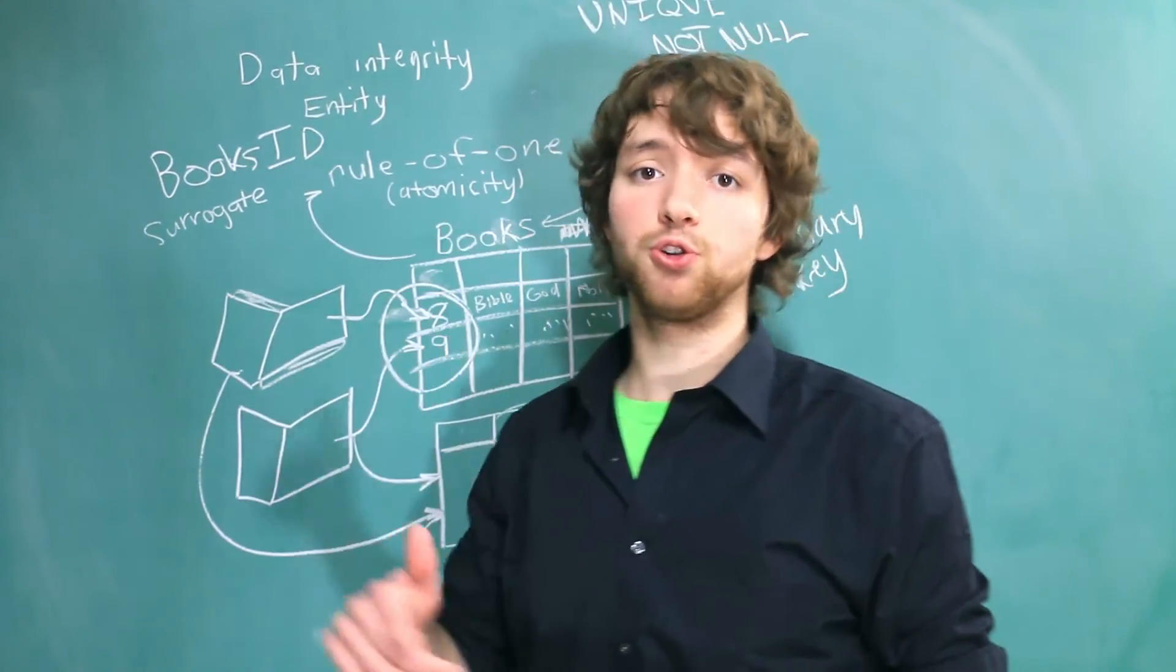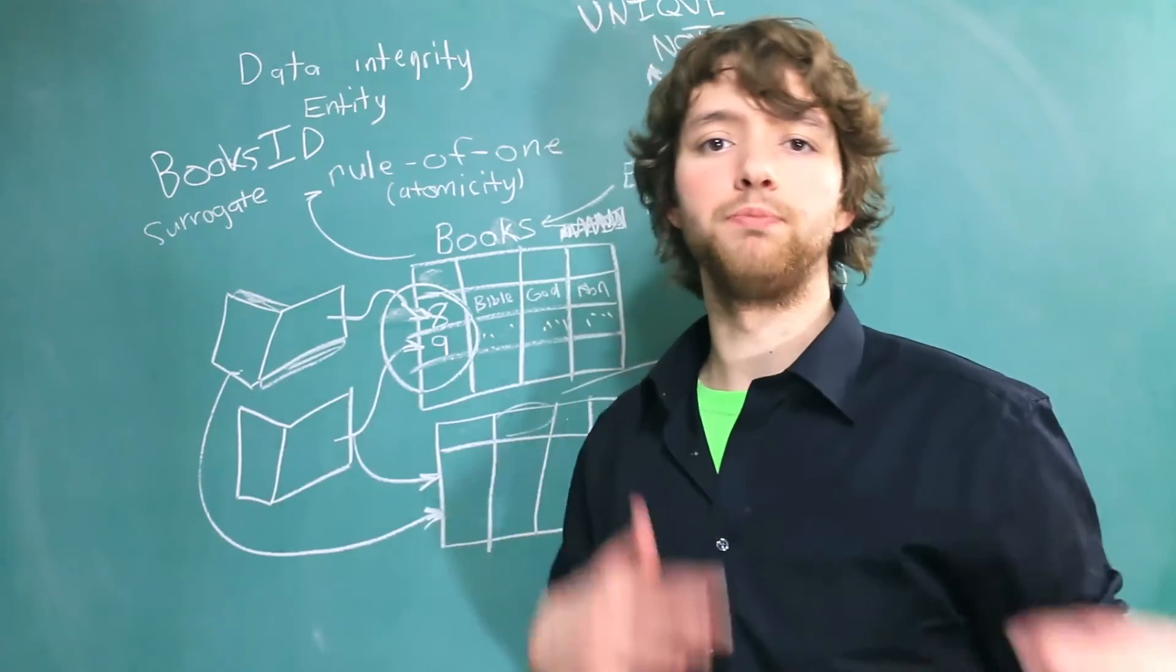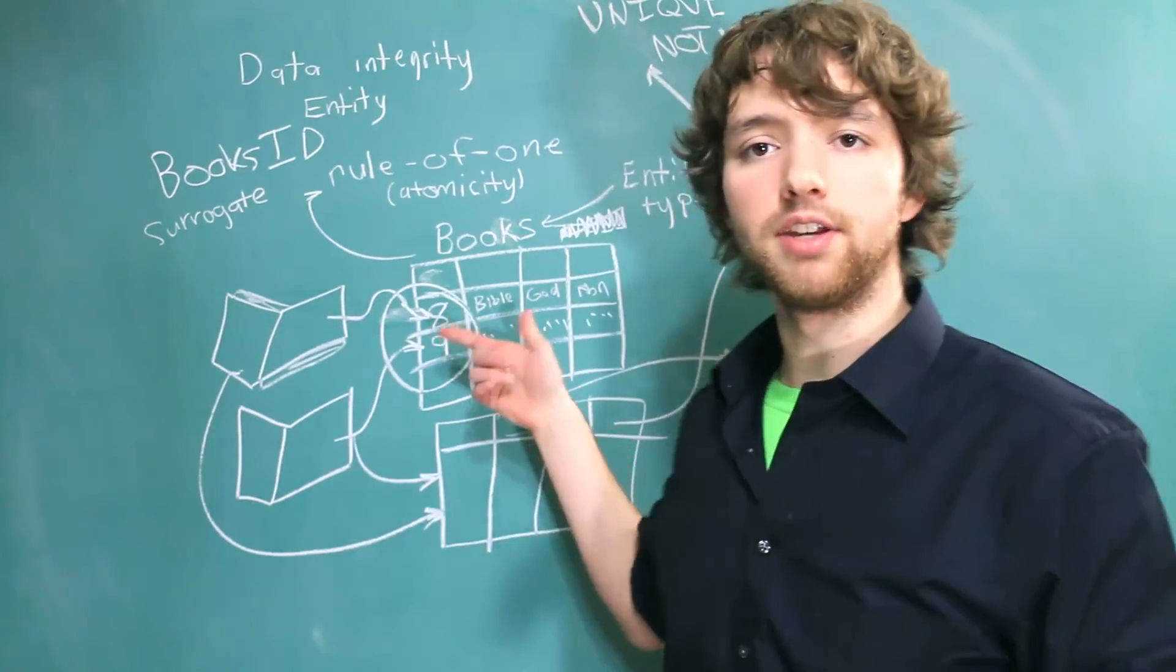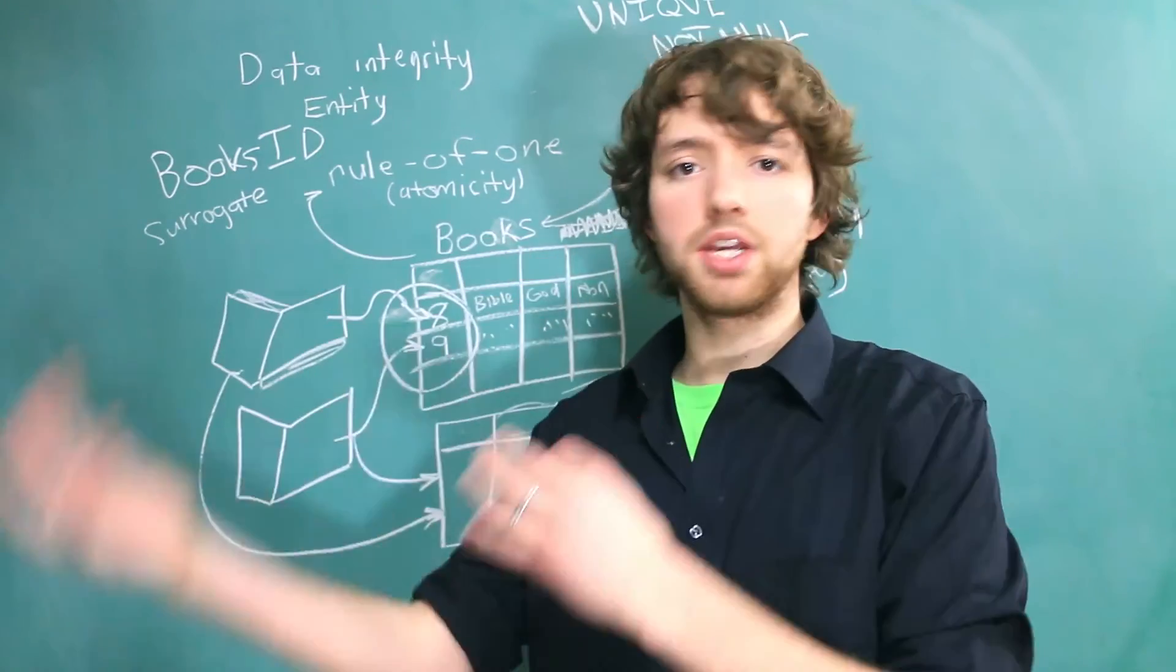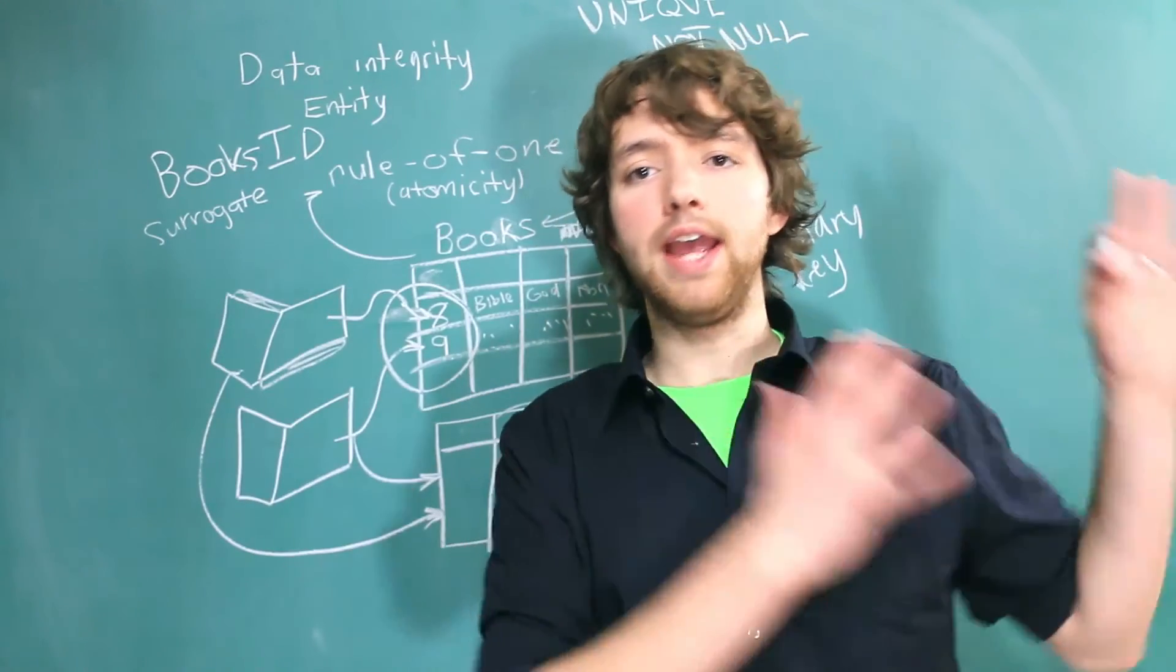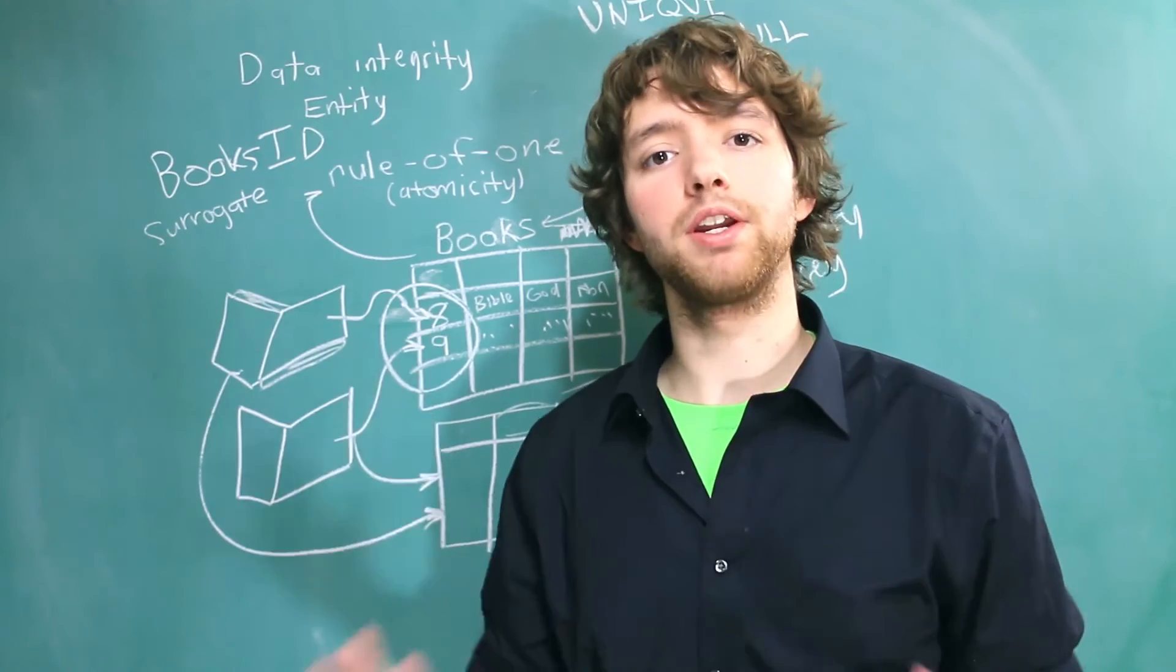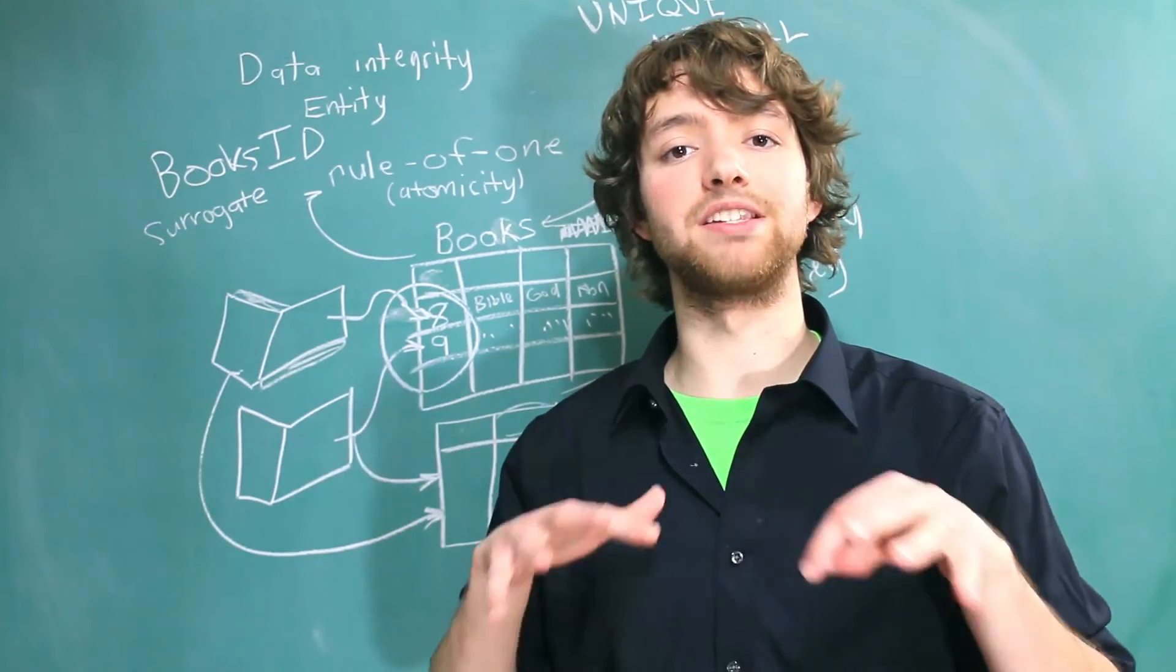Now that's an example of a surrogate key. Surrogate means computer generated. No real world meaning. This book might have an ID of 9, but that means absolutely nothing in the real world. It's not related to the ISBN. It's not related to anything. It's just a computer generated number for the sake of the database only.